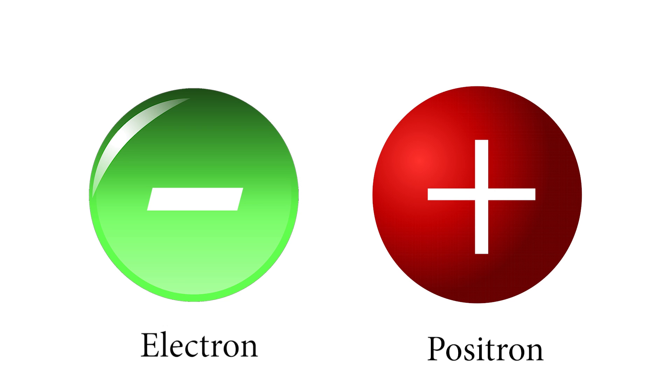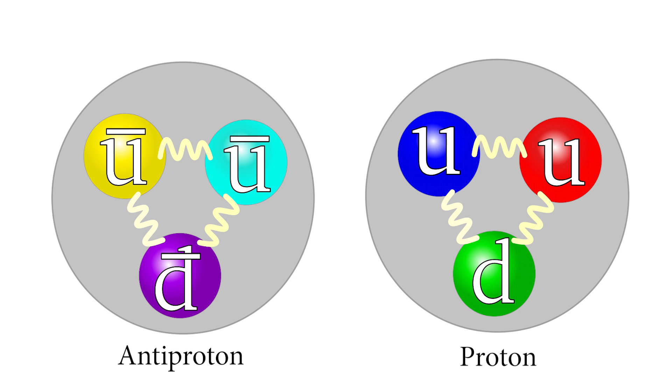The weird part is that antimatter and regular matter are almost indistinguishable. They have the same mass and most of the same properties. The only difference is that their charges are flipped. So an electron, which is normally negatively charged, its antiparticle, called a positron, is positively charged.